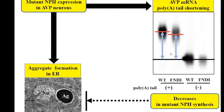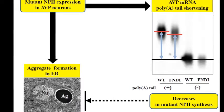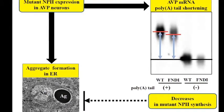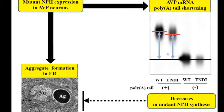Interestingly, there was no loss of vasopressin neurons in male FNDI mice up to 12 months of age, but there was vasopressin neuronal loss in females at 12 months.